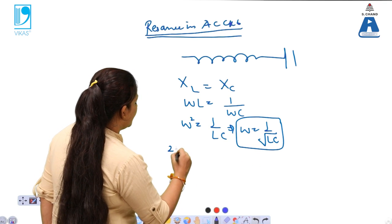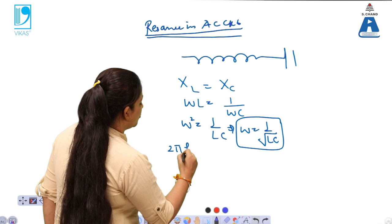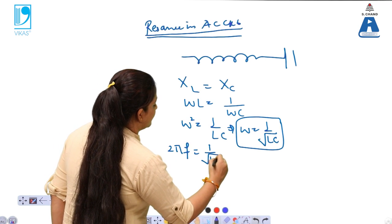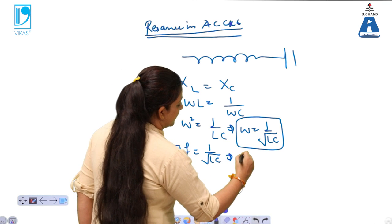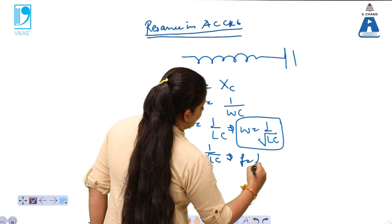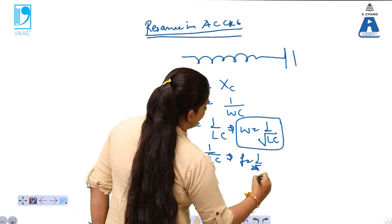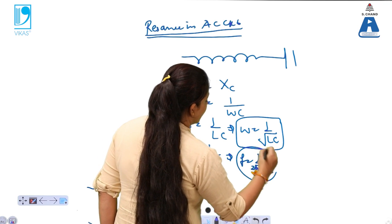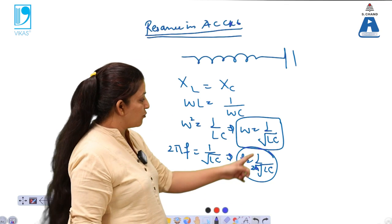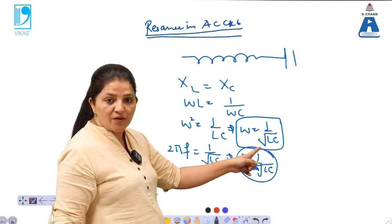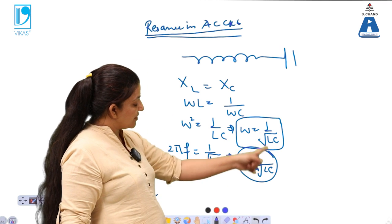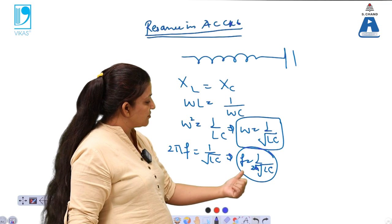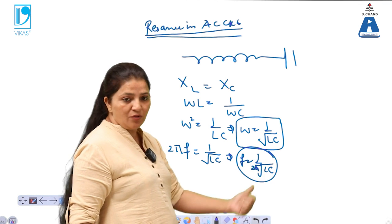The angular frequency omega can be written as 2π times f, which equals 1 divided by the square root of L times C. Therefore, the resonant frequency F equals 1 divided by 2π times the square root of L times C. Here omega is the angular frequency and F is the normal frequency of the AC circuit.